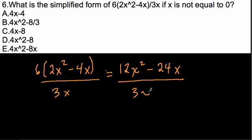And then we divide each term in the numerator by 3x. So, 12x squared divided by 3x. 3 goes into 12, 4 times, x goes into x squared once, so it's just x.